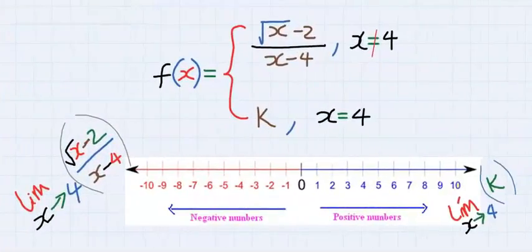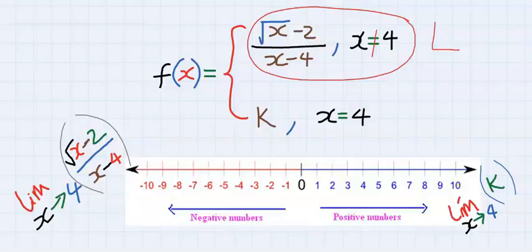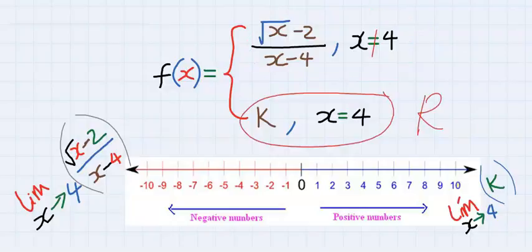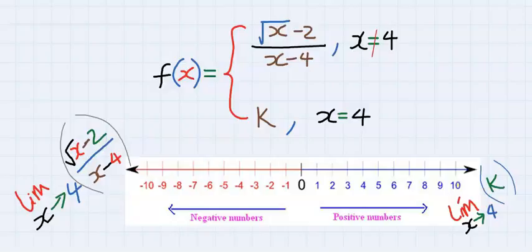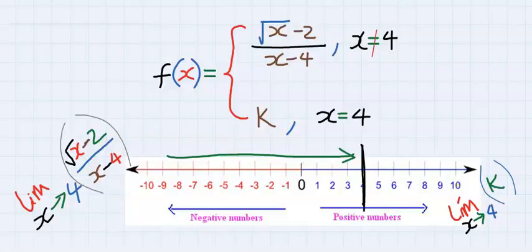The upper part is known as the left hand limit while the lower part is known as the right hand limit. From the number line, this is 4. The left hand limit will approach 4 but will not be equal to 4, while the right hand limit will approach 4 and can be equal to 4.